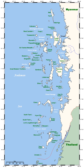An archipelago, sometimes called an island group or island chain, is a chain, cluster or collection of islands, or sometimes a sea containing a small number of scattered islands.